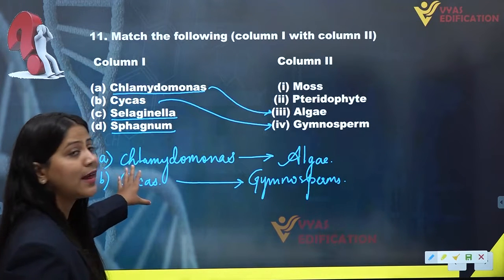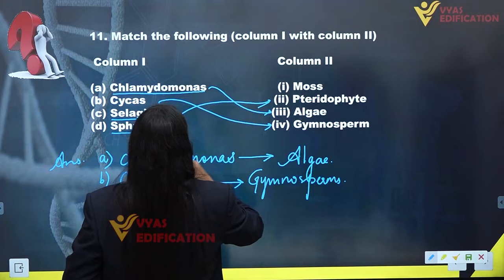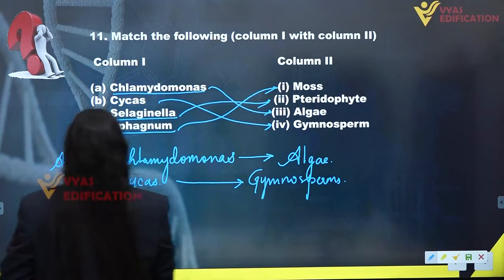Selaginella is a member of pteridophytes, and Sphagnum is a member of moss.